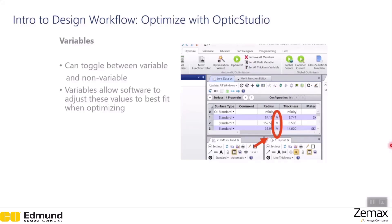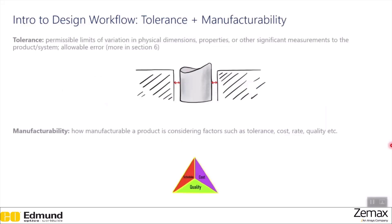Finally in the design workflow process, we have tolerance and manufacturability. Tolerance refers to the permissible limits of variation in physical dimensions, properties, or other significant measurements of a product or system — in simpler terms, it's just an allowable error, and there will be more on this in Section 6. Manufacturability is how manufacturable a product is, considering factors such as tolerance, cost, rate, and quality.